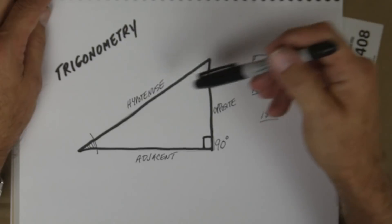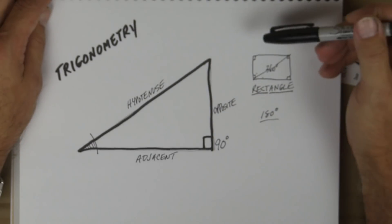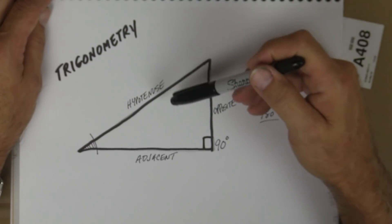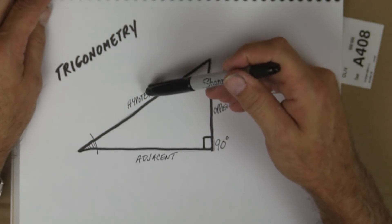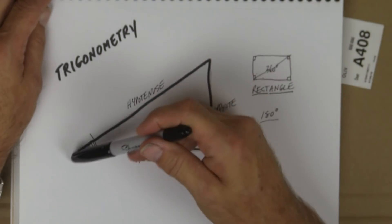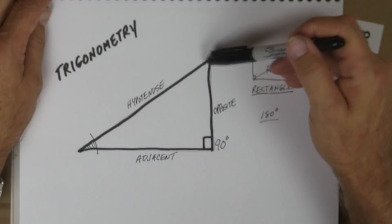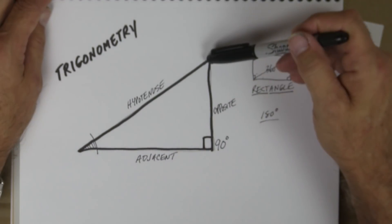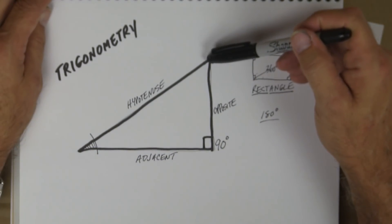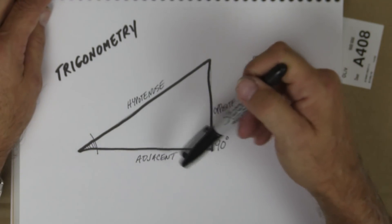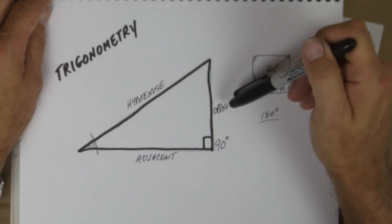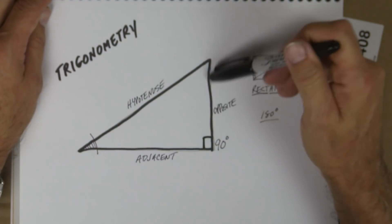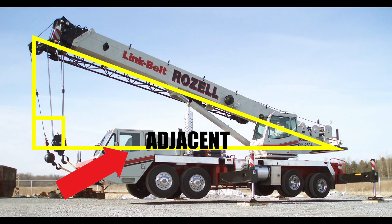So that's the first thing. You've got to remember you've got the hypotenuse, which is the long leg — that's the ladder up against the wall. Then you've got the adjacent, which is the floor. Then you've got the opposite, which is the wall.